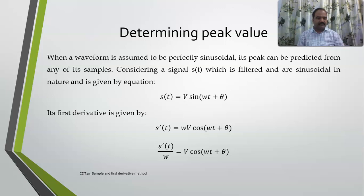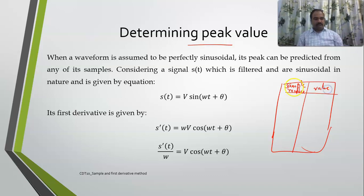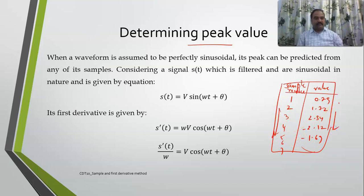Let us suppose you have a set of signal samples — sample number and value. So sample numbers 1, 2, 3, 4, 5, 6, 7 and you have values like 0.79, 1.72, 2.34, minus 2.12, minus 1.69, and so on. These samples might represent power, voltage, current, or whatever, but we assume that these are of sinusoidal form.